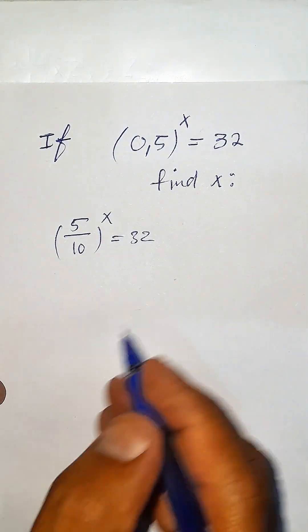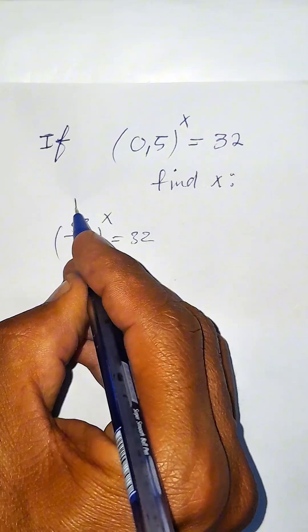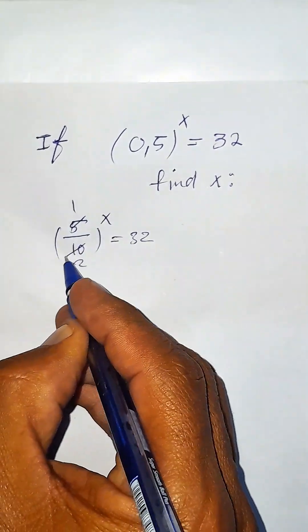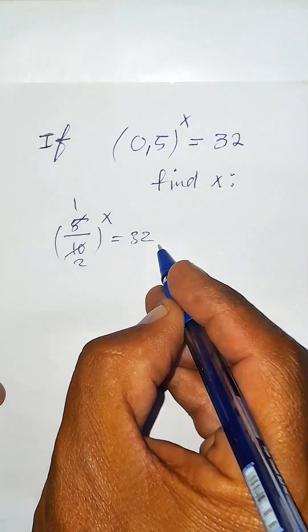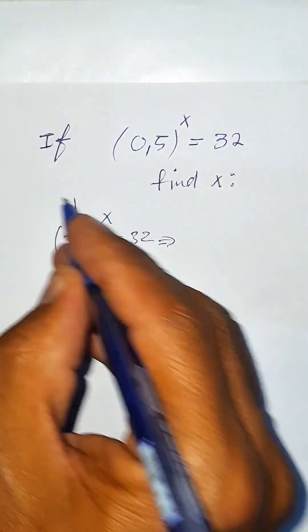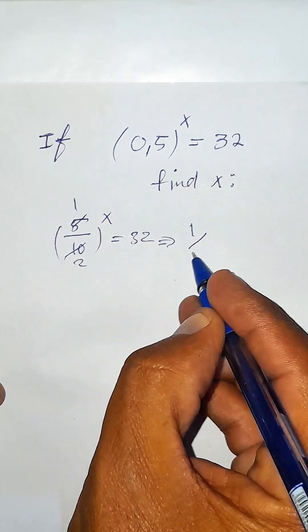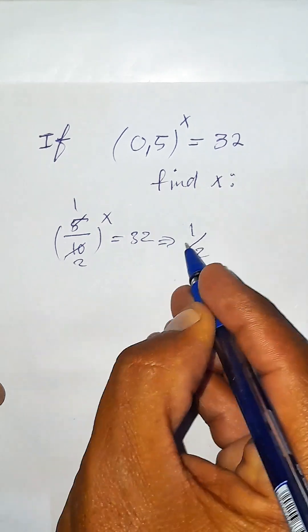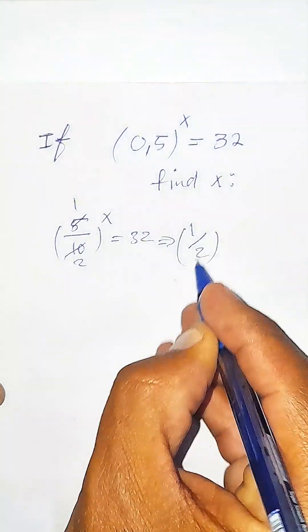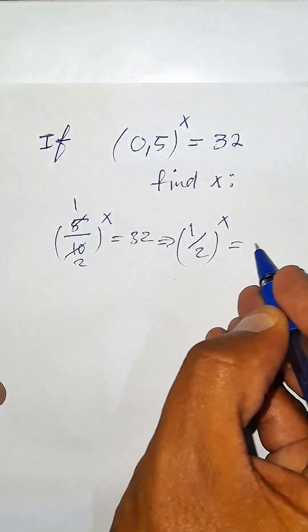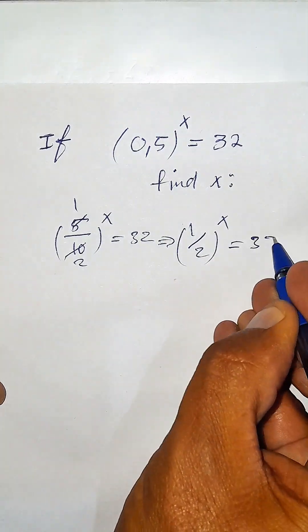And now, 5 over 10 simplifies — since 5 over 10 becomes 1 over 2. So this becomes 1 over 2, whole to the power of x, equals 32.